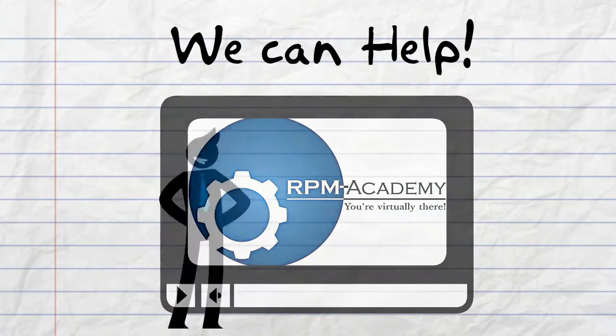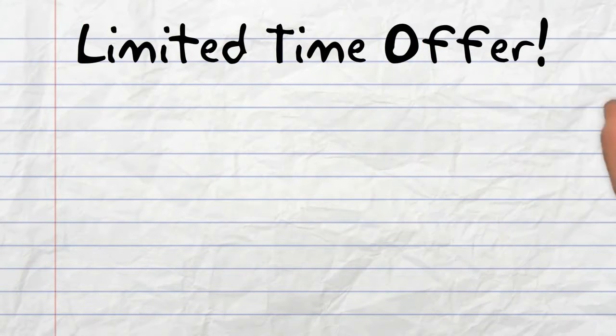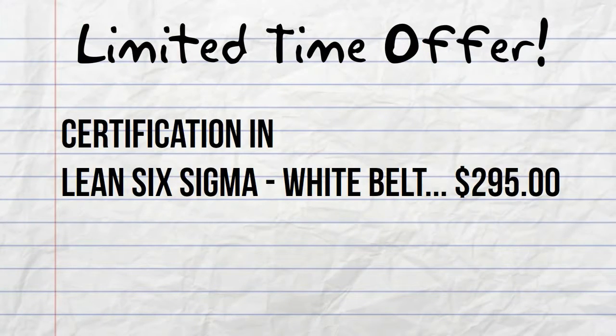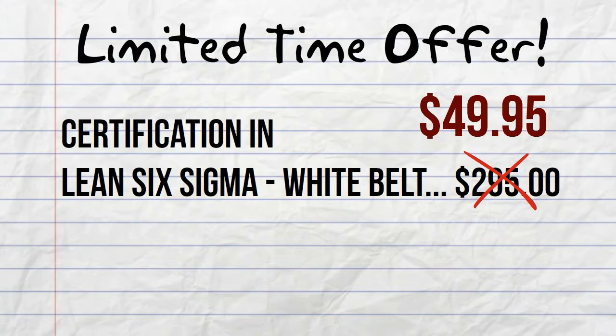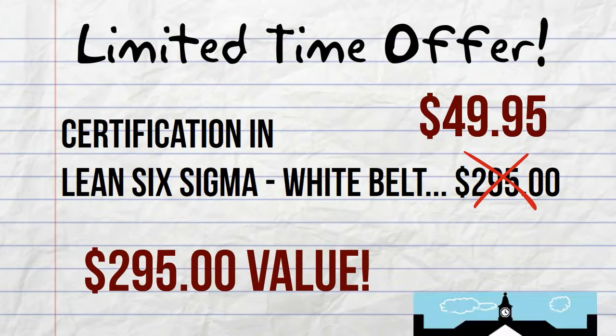So how can we help you prepare for that next chapter and leverage Lean Six Sigma as your competitive advantage? For a limited time only, you can earn your certification in Lean Six Sigma white belt for $49.95, a $295 value offered exclusively to university students.